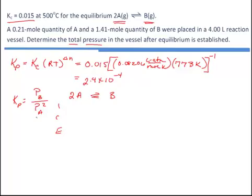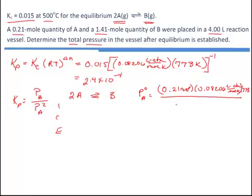They gave me the moles of the two substances, the volume of the container, and the temperature. So for both of those gases, I can use PV equals nRT to come up with the initial amounts. The initial pressure of A would be equal to its moles, 0.21, the R value, and the temperature 773 K, divided by the volume, 4 liters. This gives the initial pressure of A as 3.33 atmospheres.